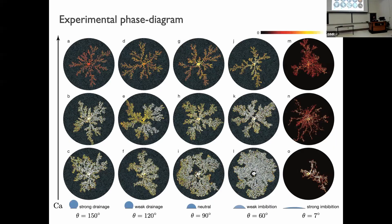We performed this experiment for different wettabilities — different contact angles — and different capillary numbers. On the x-axis going from left to right, we go from strong drainage to strong imbibition, and on the y-axis from bottom to top we go from low to high capillary number. We observe a variety of different patterns and colors that we'll analyze in more detail.